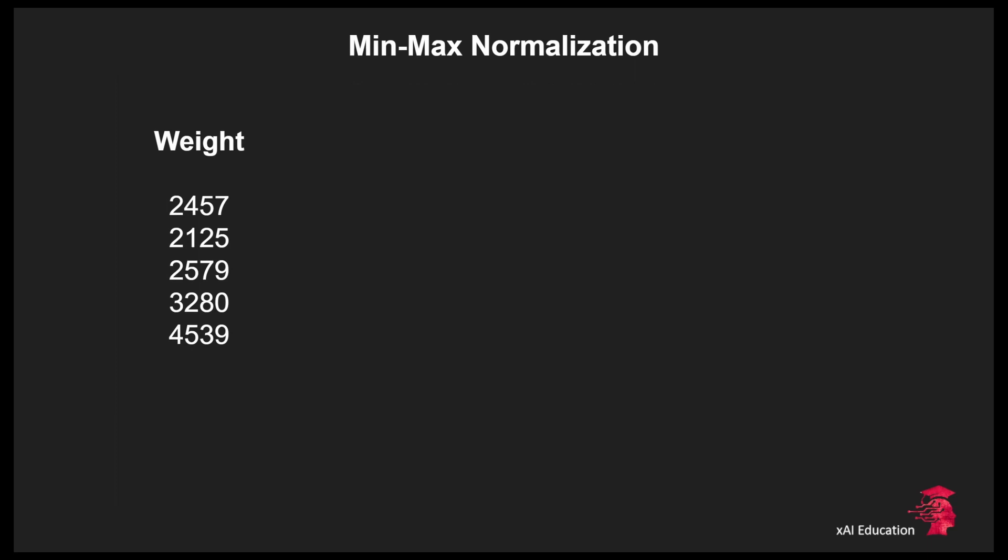Let's do a quick example in order to understand how to transform a feature with the min-max normalization into the interval 0 to 1. So we got our feature the weight and a few values. First of all we identify the min and max.